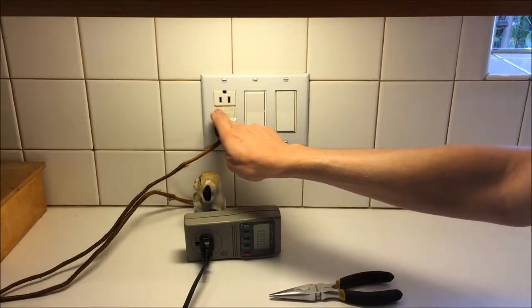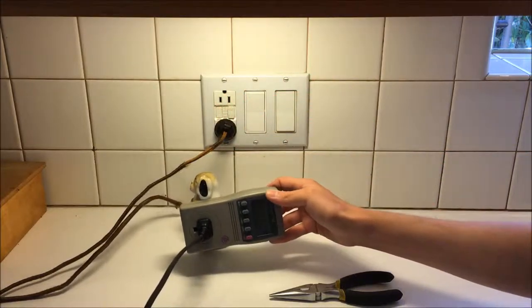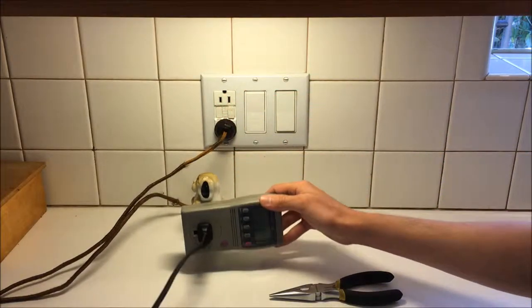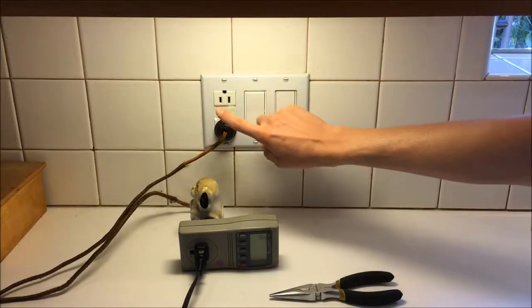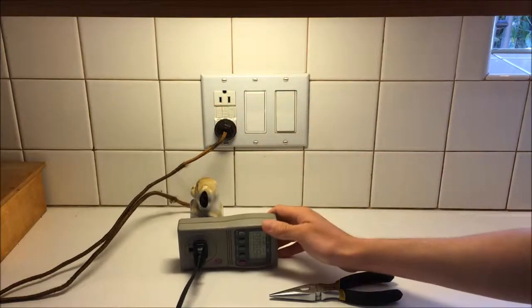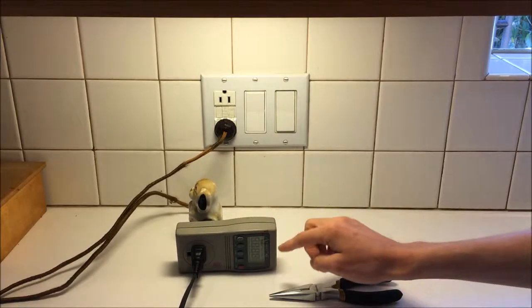So to test it you press the button and you'll notice my kilowatt meter which is plugged into the electropop is no longer operating, there's no power left on this circuit. And if I press the reset, power's back on.